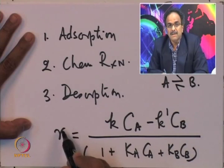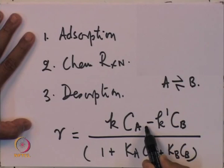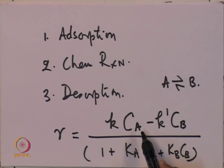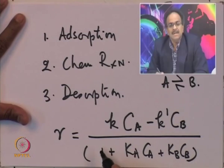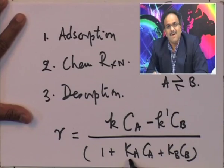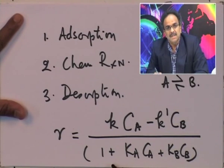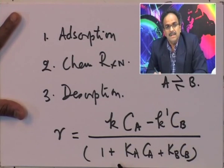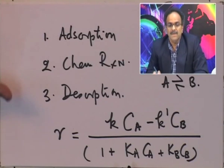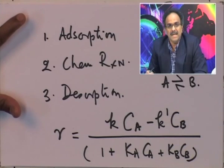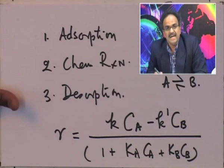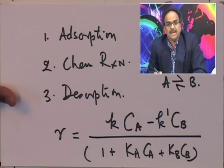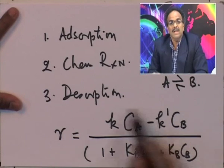If you closely observe this rate equation, in the numerator you have something similar to what you would have gotten if the reaction was not catalyzed by a solid catalyst — that is, a normal reaction in a homogeneous medium. The denominator arises because of the adsorption and desorption of species, since there is competition for the empty or active sites. Already-occupied sites are unavailable for the reaction to take place.